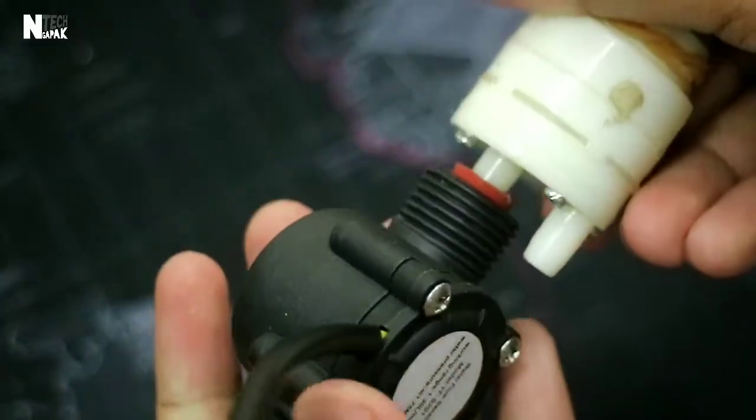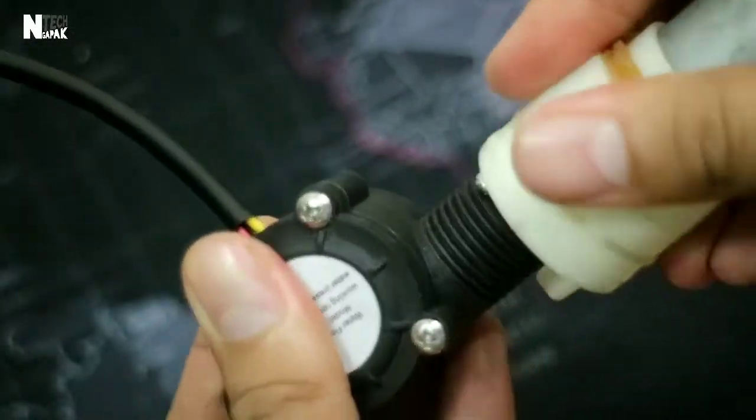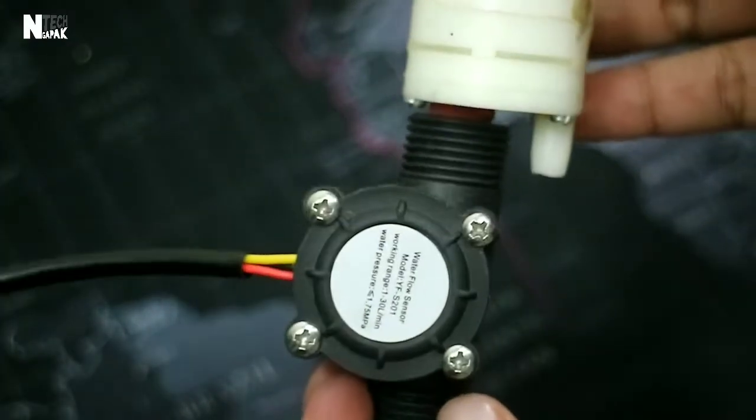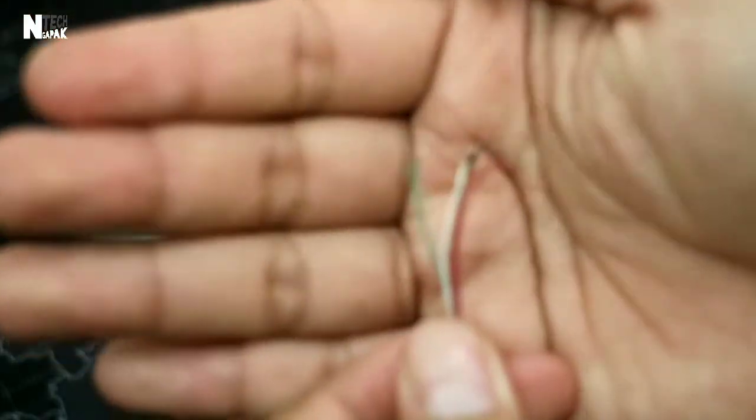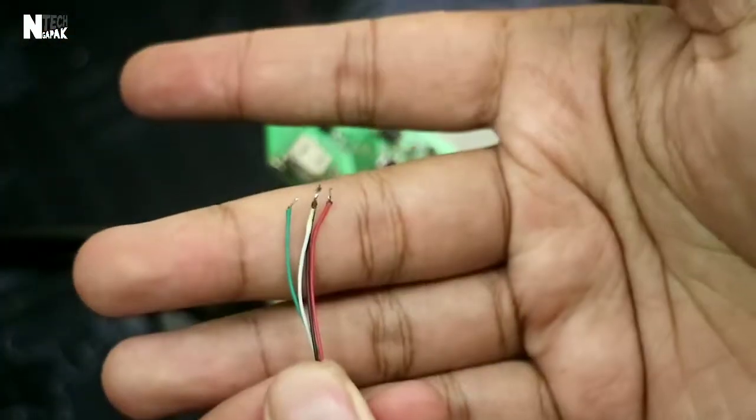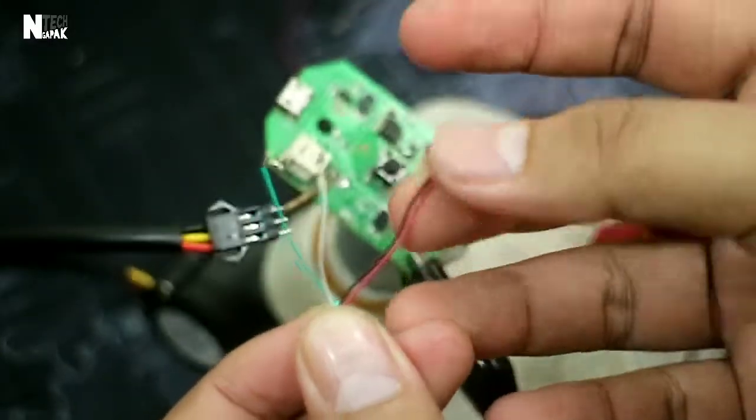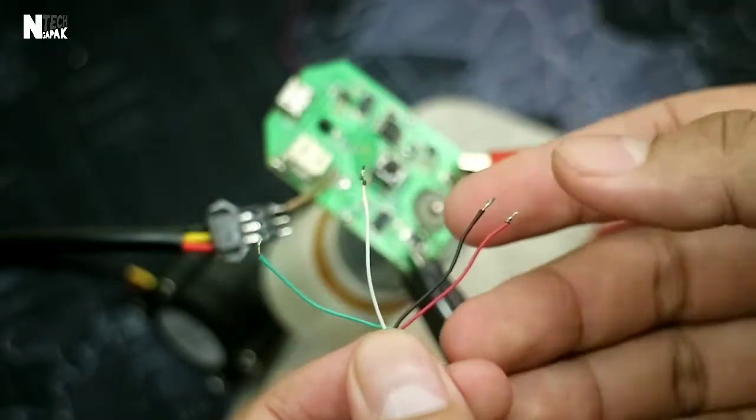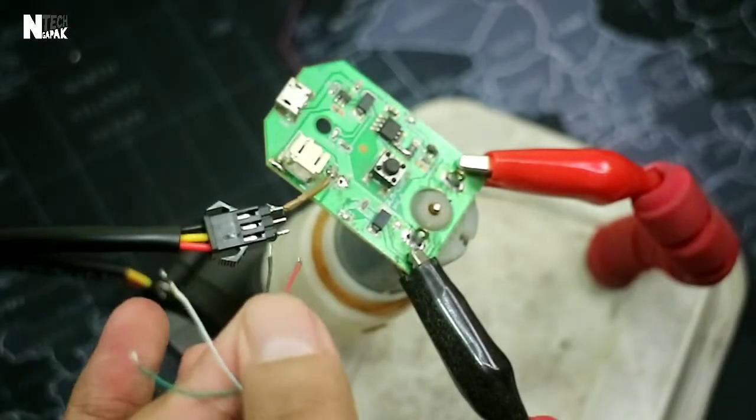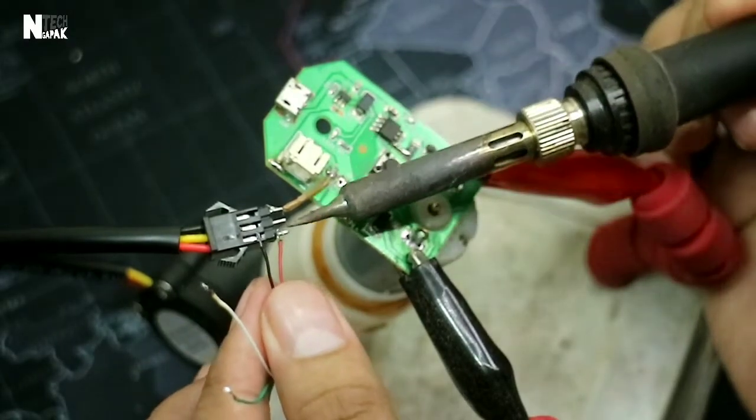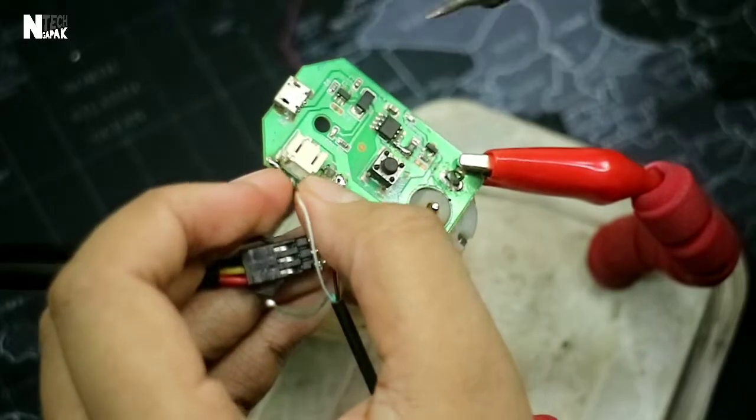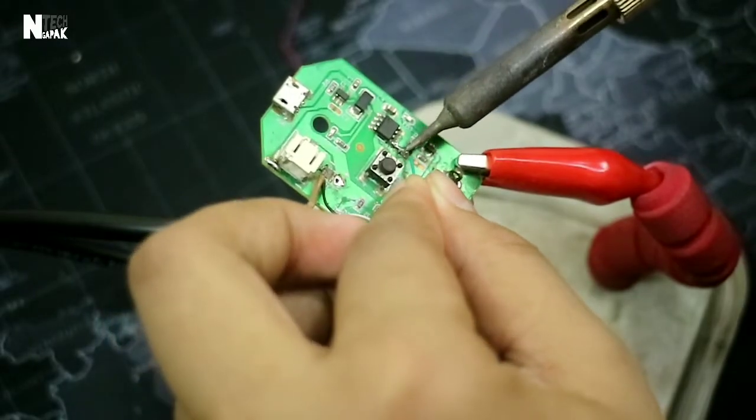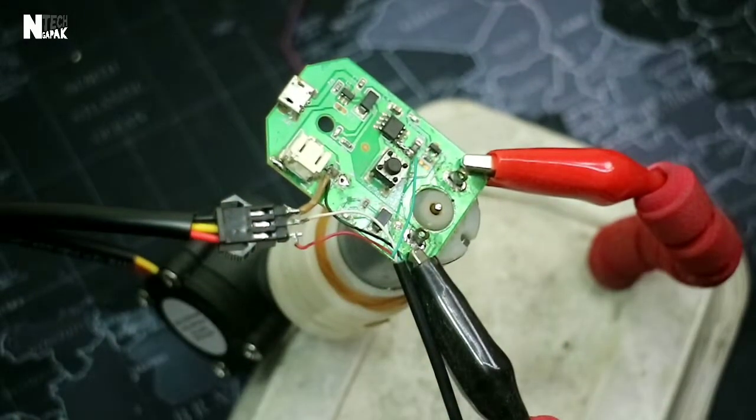For power and signal, I'm using 4 cables - plus-minus and 2 signal wires. One for the pump and one for the water flow sensor. The plus-minus only connects to the sensor because the pump already has a battery. So we just need to connect the ground. Here, it looks like this.